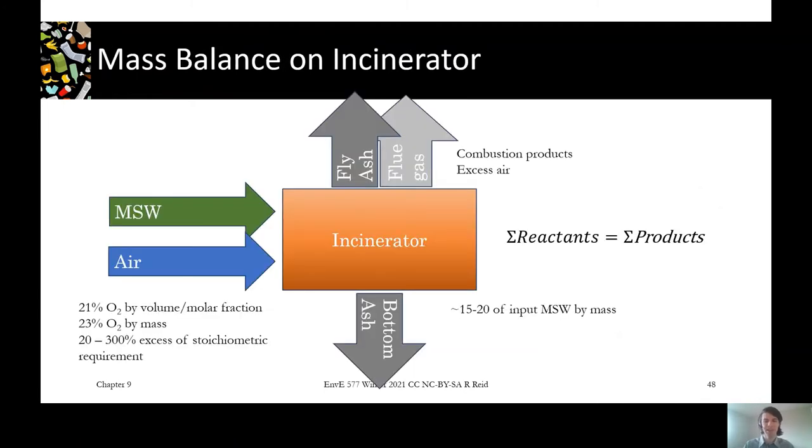When we do a mass balance, the same as any other mass balance, the sum of the reactants has to equal the sum of the products. Specifically for us, our air is going to be about 20% to 300% more in terms of oxygen than we actually need. That's the amount of excess that's present.